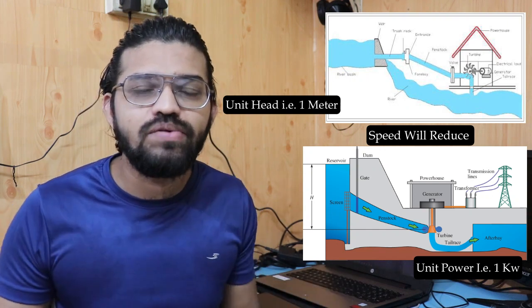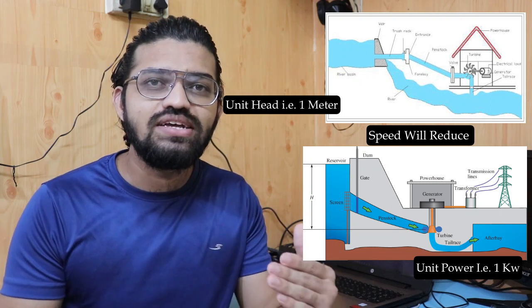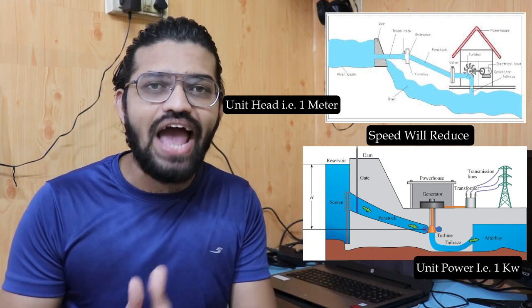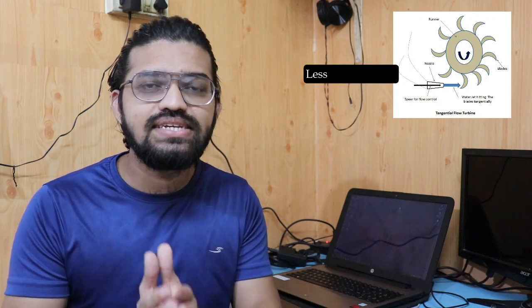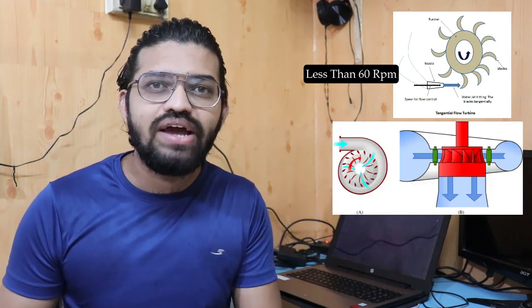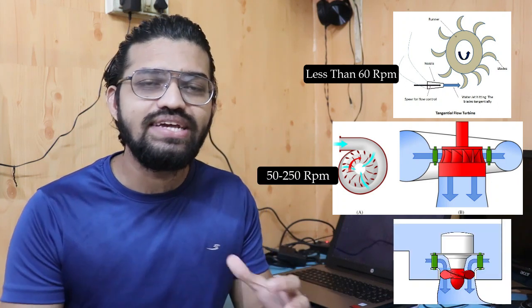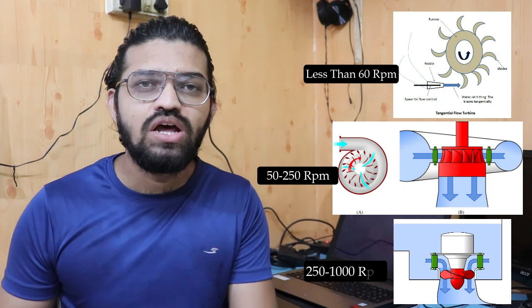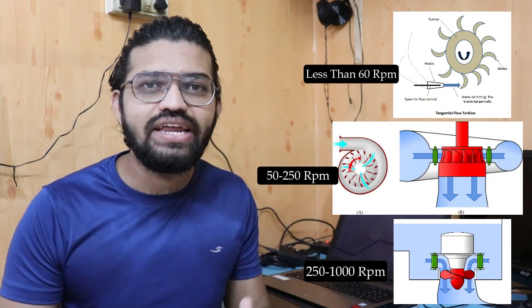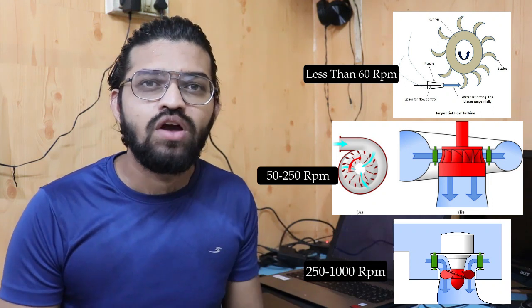The specific speed is used to differentiate between impulse and reaction turbines. The impulse turbine — the Pelton wheel — has specific speeds less than 60 RPM. The Francis turbine ranges from 50 to 250 RPM, and the Kaplan turbine has higher specific speeds ranging from 250 to 1000 RPM. So specific speed is the key criterion used to distinguish between these types of turbines.